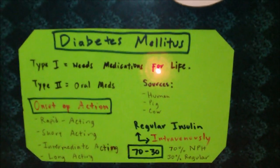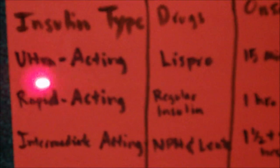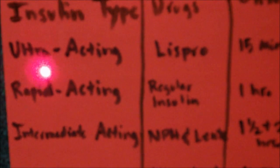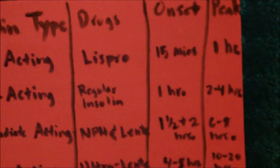Let's go back and compare the insulin peaks and onsets of the different types of insulin. Starting with ultra-acting insulins: an example is LISPRO, with an onset of 50 minutes and a peak of one hour.